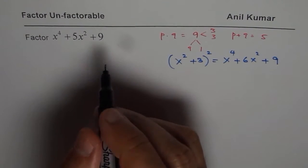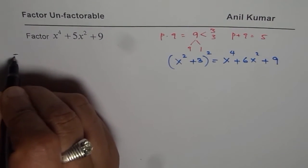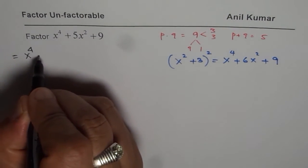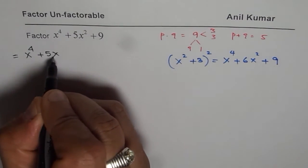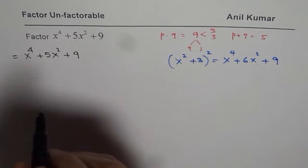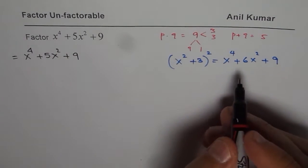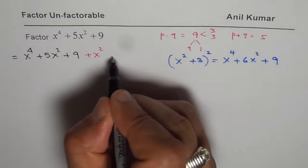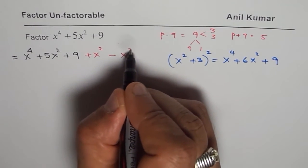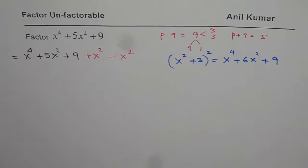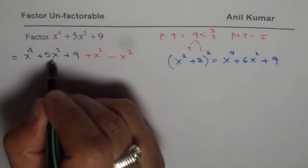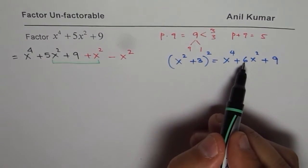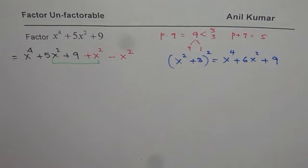So what we will do here is that we will write this trinomial as x to the power of 4 plus 5x squared plus 9 and we will actually add and subtract 1x squared. So we will add x squared and we will also subtract x squared. Now that helps, since the combination of 5x squared will give us 6x squared.